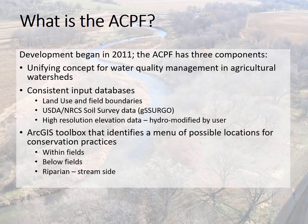We began work on the ACPF in 2011. It has essentially three pieces to it. There's a unifying concept for water quality management that provides a consistent, scientifically defensible, and flexible approach to address water quality improvement in agricultural watersheds. The second piece is a database that brings together high-resolution data for field-level conservation planning. And the third piece is an ArcGIS toolbox — the ACPF toolbox — that can be used to propose possible locations for a variety of conservation practices.